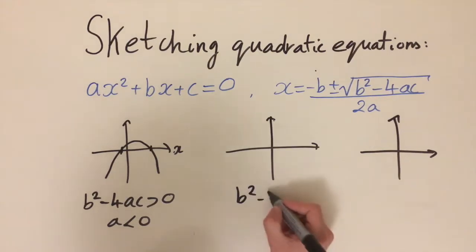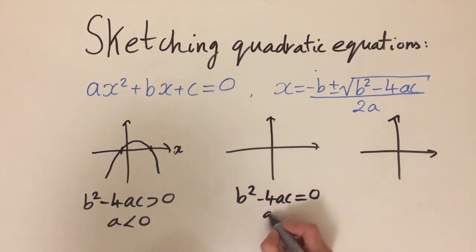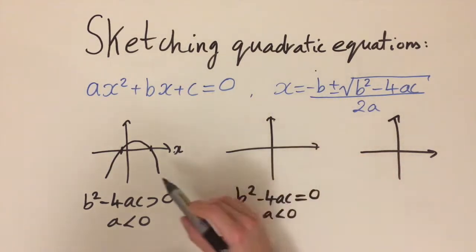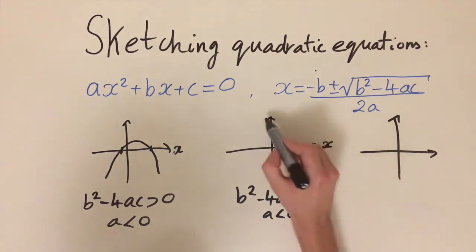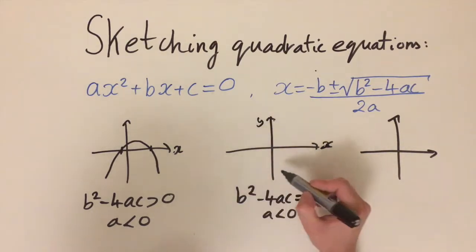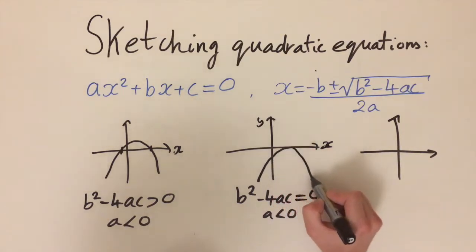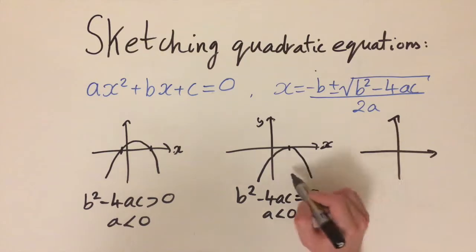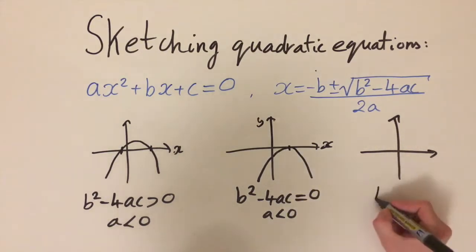For the second case, when b squared minus 4ac equals zero and a is negative, we get exactly one solution. The curve crosses the x-axis once, going off to negative infinity on both sides — just coming up, kissing the x-axis exactly once, then going back off to negative infinity.